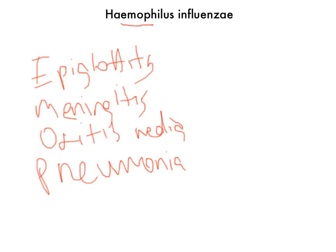You treat Haemophilus infections — epiglottitis with cherry red epiglottitis, meningitis in someone who didn't get an immunization, otitis media with loss of hearing, and pneumonia with lung infiltrates — with ceftriaxone, which is a third-generation cephalosporin more active against gram-negative rods, which is what Haemophilus is. It's a gram-negative coccobacilli.